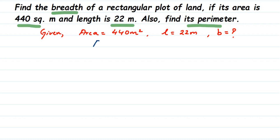The area formula is: area = length × breadth. Always use what we know from the question. They have given the area, so we use that to find the other dimension — the breadth. Substituting the known values: 440 = 22 × b. We don't know the breadth yet, so we write b.